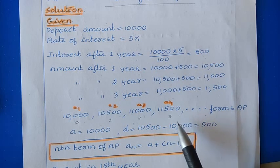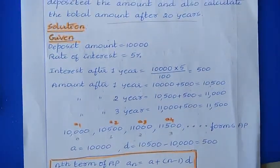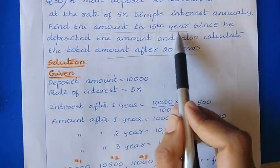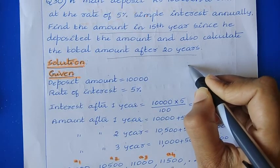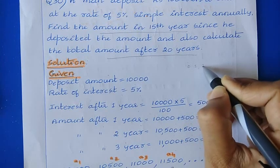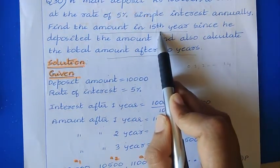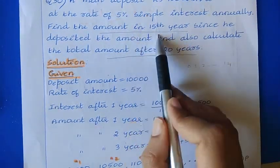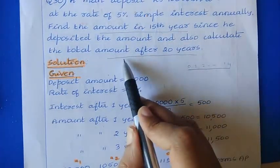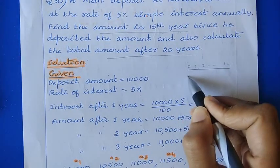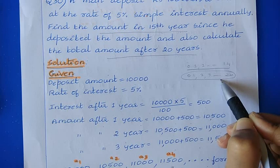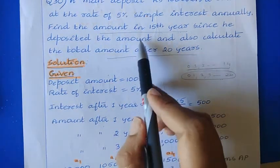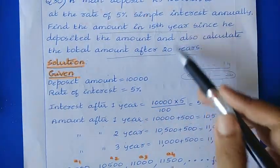Using the arithmetic progression concept, we can find the amount in the 15th year and after the 20th year. There is a major difference: 'amount in 15th year' means we consider interest from year 0 up to year 14 — the 15th year's interest is not included. 'Amount after 20th year' means we include up to year 20. This is the key difference, so just note that down.